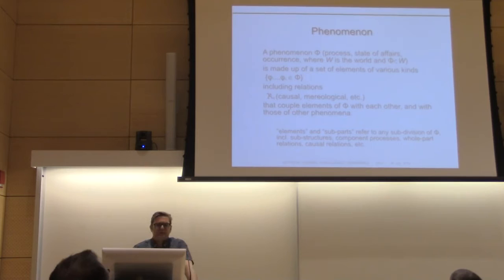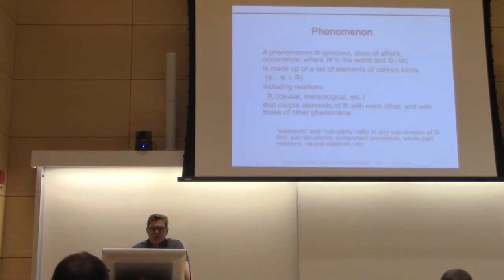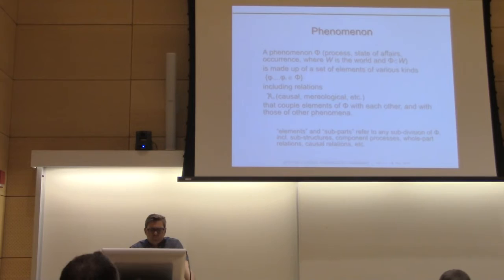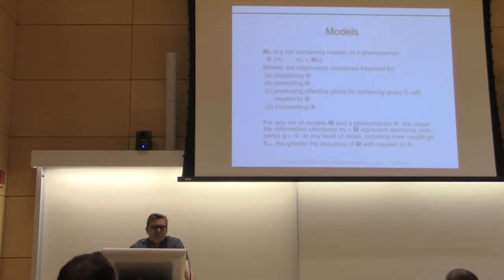We say that a phenomenon phi is some process, state of affairs, or occurrence — it's a convenient scalable concept. It could be the bouncing ball, it could be how my phone operates. It's made up of a set of elements that have relationships, including causal, whole-part, and so on. Then m is a set of models of that phenomenon. These models are intended for any agent in a reasonably complex world — for explaining, predicting, producing plans for achieving goals with respect to the phenomenon, and for recreating the phenomenon.